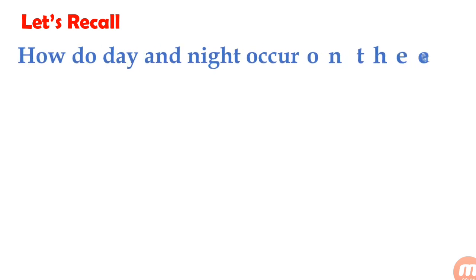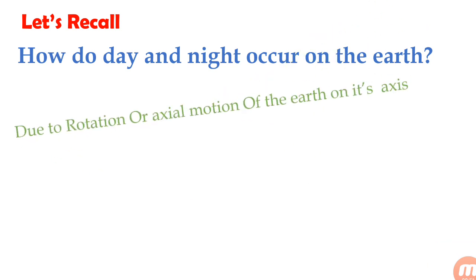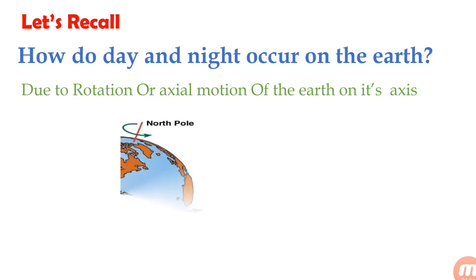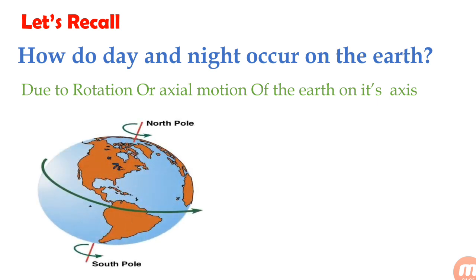First, we recall the questions of this lesson. The question: how do day and night occur on the earth? Due to rotation or axial motion of the earth on its axis. You will have the question — what is the exact axis? You can see a red line which shows the north pole and south pole. It goes from the center of the earth — that is called the axis.